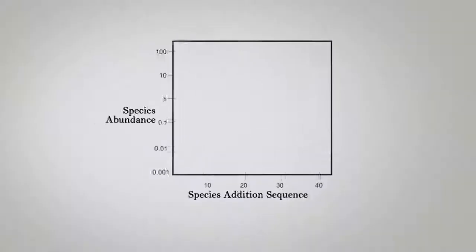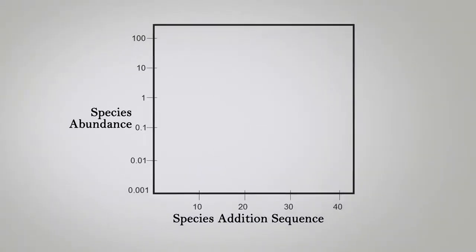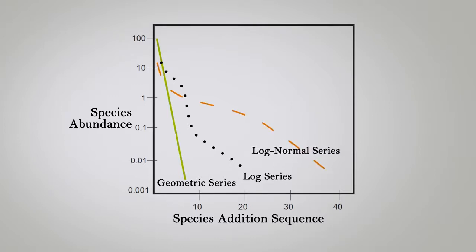When we want to represent different models for evenness distribution and abundance distribution, we can start from the less even, that means there is only one species or very few species in the sample, that represent the almost parallel line to the y-axis, and this is the geometric series. Then we move more and we have log series, the sample is more even. Then we have log normal series, the evenness is rising. And the last one is the broken stick model, that is the maximum even model.